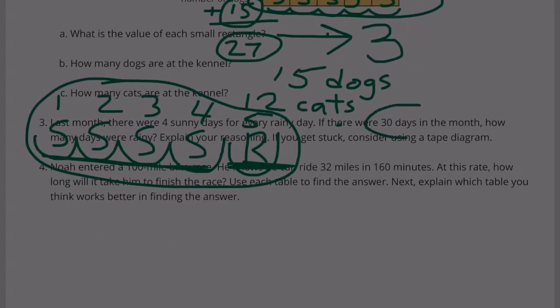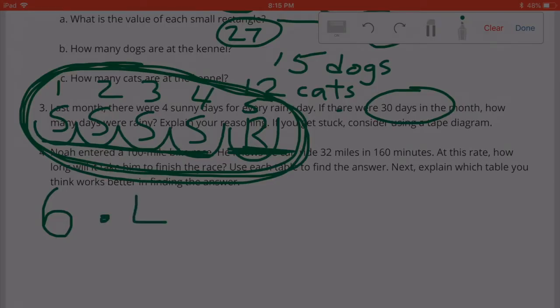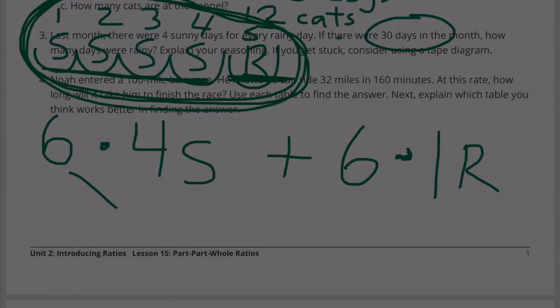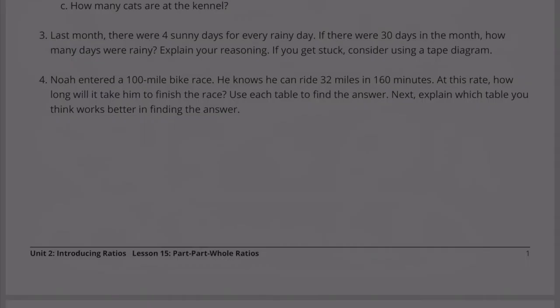So the question is, there's 30 days. Well that means that we're going to have 6 things exactly like this, because 6 times 5 is 30. 6 times 4 sunny days plus 6 times 1 rainy day. 6 times 4 is 24 sunny days plus 6 times 1 is 6 rainy days. So every 30 days, there would be 24 sunny days and 6 rainy days.